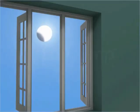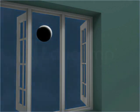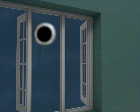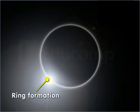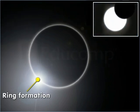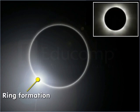During a solar eclipse, the Moon partially or fully covers the Sun as viewed from a location on the Earth. During a total solar eclipse, all one can see from the Earth is a ring of light around the Moon. This thin circle of light is visible because that is the only part of the Sun that the Moon did not cover.